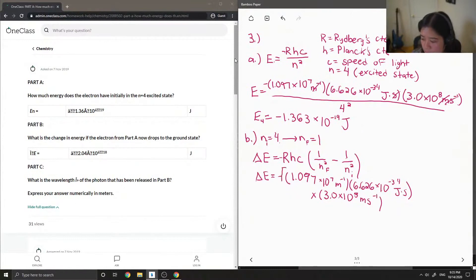and then all of this is multiplied by 1 over 1 squared minus 1 over 4 squared